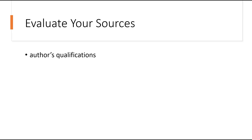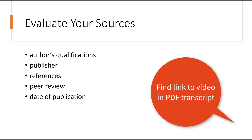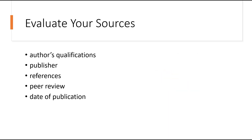In a companion video to this one called Evaluate Your Sources, we reviewed several key elements that signal academic authority in a publication, such as author's qualifications, publisher, references, peer review, and date of publication. However, these criteria work best when applied to traditional academic sources. You need a different set of evaluation criteria when searching for popular information on the web, such as news stories, government publications, and business or health information.